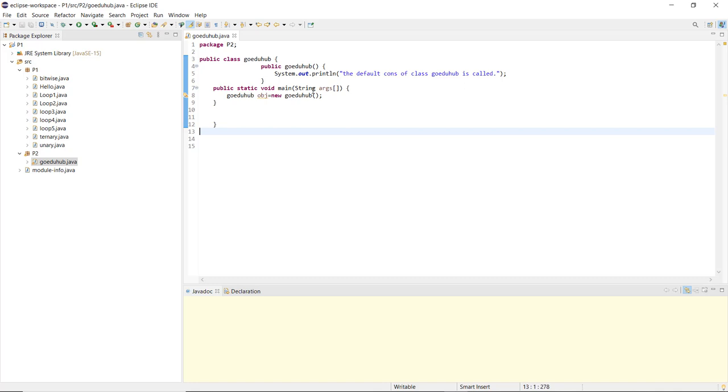In the public static void main method, what I have done is I have created a new object. That is of the class GoEduHub and the object obj is created with the help of the new keyword. New keyword we have studied that it is used to initialize the new object created of a class. That you need to use the new keyword for creation of an object.